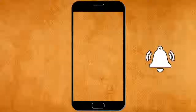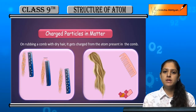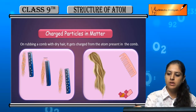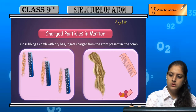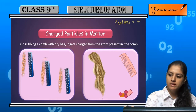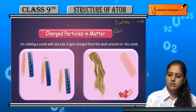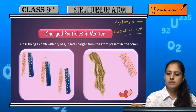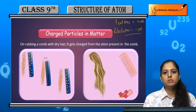Our first topic is charged particles in matter. In matter, there are two charged particles: first are protons, which are positively charged, and second are electrons, which are negatively charged. Matter consists of atoms and molecules.